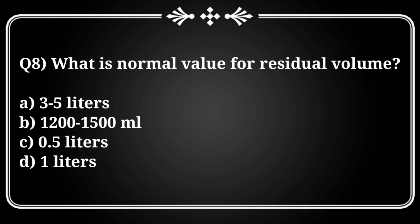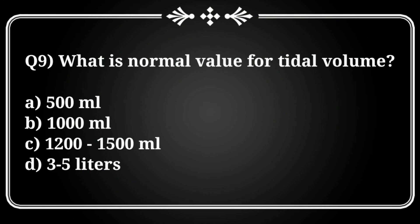Question 9: What is the normal value of tidal volume? Options: A) 500 ml, B) 1000 ml, C) 1200–1500 ml, D) 3 to 5 liters. The correct answer is option A, 500 ml. That is the normal tidal capacity.